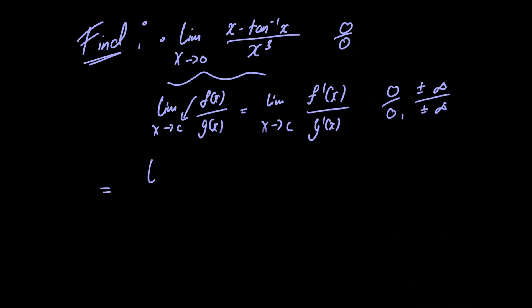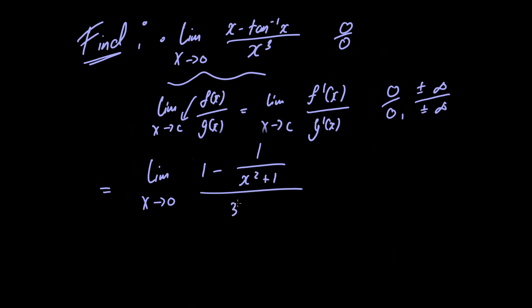So we're going to have the limit as x approaches 0. The derivative of the numerator is just 1 minus 1 over x squared plus 1, and the derivative of the denominator is just 3x squared.